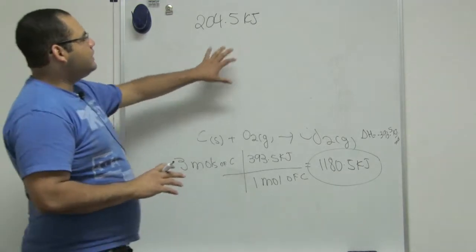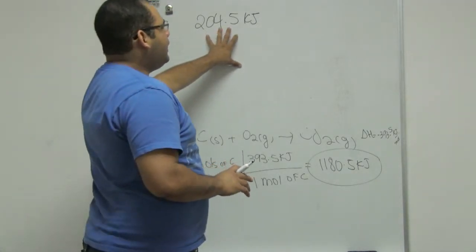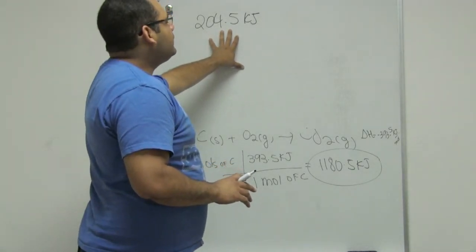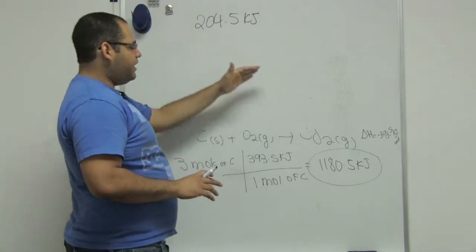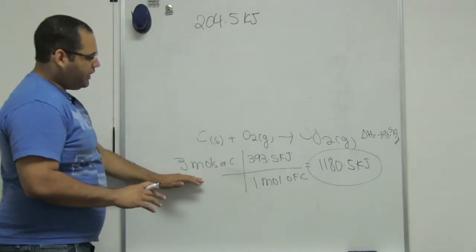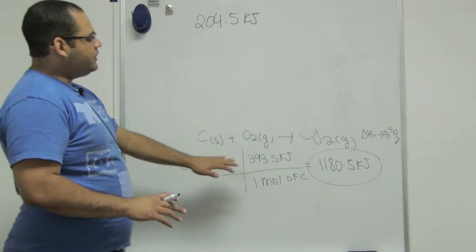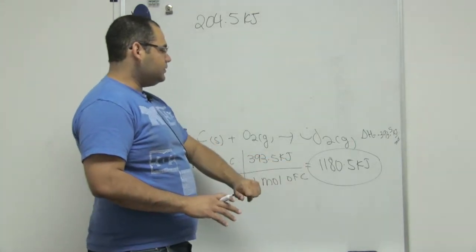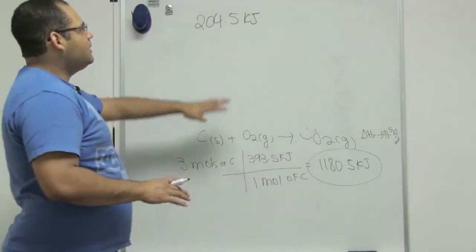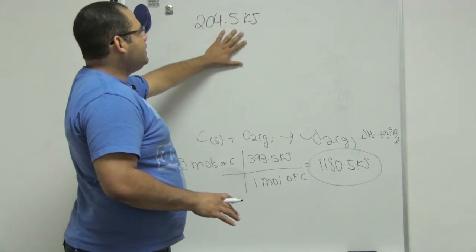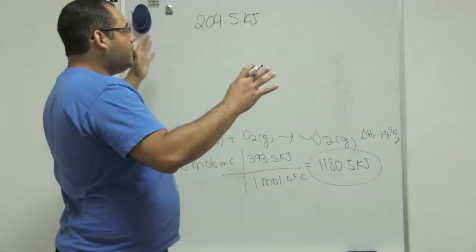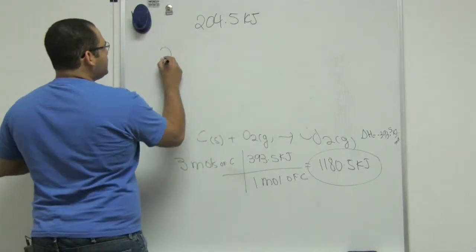So now we have the amount of energy and we want to work backwards. We have energy. On this problem we have the moles, we just want to know how much in kilojoules, how much heat. This problem here we have the heat and want to know how many grams.